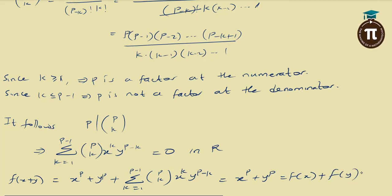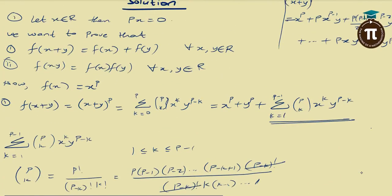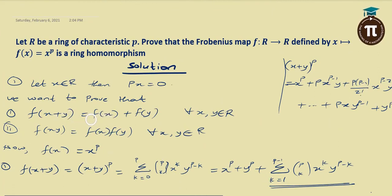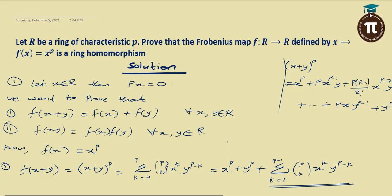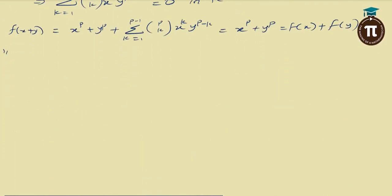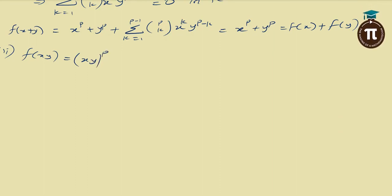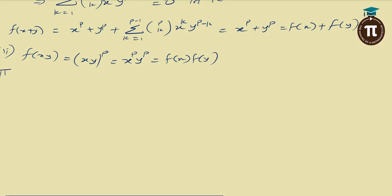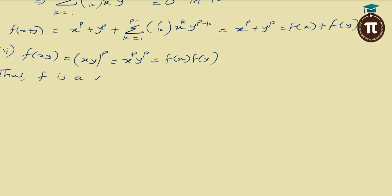So I am done with the proof of the first property. To summarize: we showed that F of X plus Y equals F of X plus F of Y. For the second property, F of XY equals XY raised to power P, which obviously equals X raised to power P times Y raised to power P, and that is F of X multiplied by F of Y. Since I am able to show both of those properties, F is a ring homomorphism.